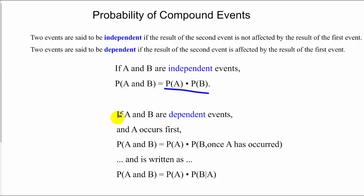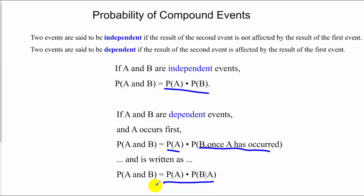If we have dependent events, so one depends on the other, then we find the probability of A and multiply that by the probability of B once A has occurred. That's also written as P(A) times P(B|A), meaning the probability of B given that A has already occurred.